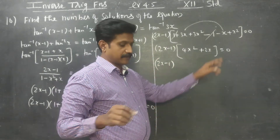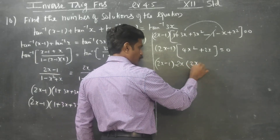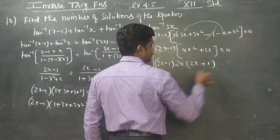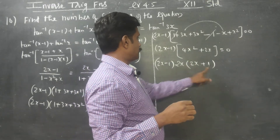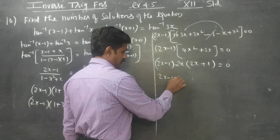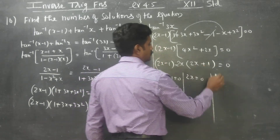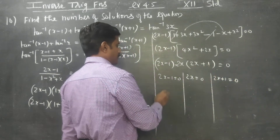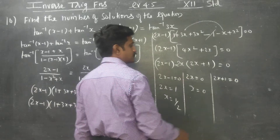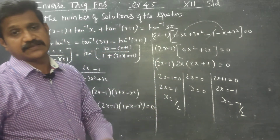This gives two equations: 2x minus 1 equals 0, and 2x plus 1 equals 0. Solving these: 3x equals 1 so x equals 1/2; x equals 0 divided by 2 which is 0; and 2x equals minus 1 so x equals minus 1/2. We have found all solutions.